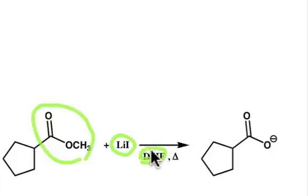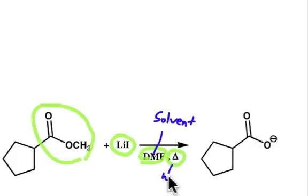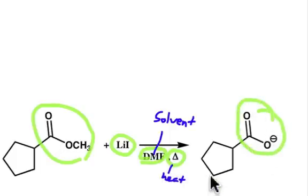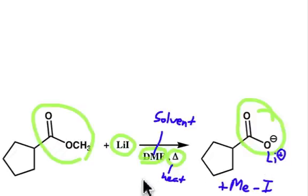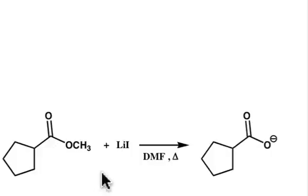It's run in DMF with this triangle, which symbolizes heat when we add heat to a reaction. Out of it, we get this carboxylate. The stoichiometry should be balanced in this case — methyl iodide gets released from this reaction, but it's not shown. So beware: even if it's not written there, make sure the stoichiometry is balanced so you know where everything goes.